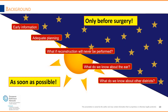Both approaches must answer the same questions: do we need early information? Is radiology useful for adequate planning? What if reconstruction will never be performed? What do we know about the ear without radiology, and what do we know about other anatomical districts? Do we actually need it?